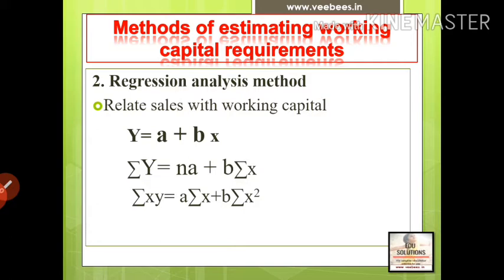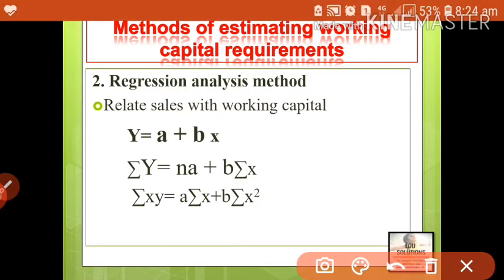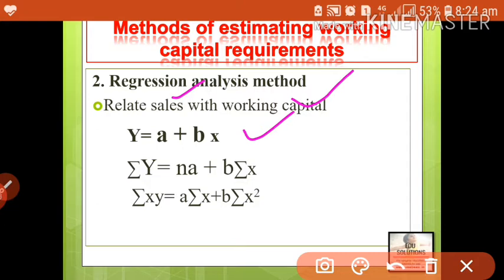We know what regression analysis is — we infer the value of one variable with the help of the value of another variable. Here we are relating sales with working capital, meaning we calculate the value of working capital based on the value of sales. For this purpose, we use the equation y = a + bx. To find the values of a and b, we use: σy = na + b·σx, and σxy = a·σx + b·σx².